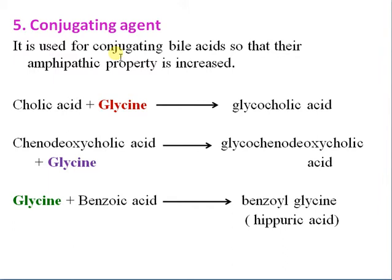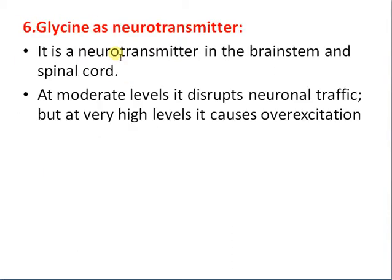As a conjugating agent, glycine is used to conjugate bile acids, thereby increasing their amphipathic properties. Cholic acid combines with glycine to form glycocholic acid. Chenodeoxycholic acid combines with glycine to form glycochenodeoxycholic acid. Glycine also combines with benzoic acid to form hippuric acid.